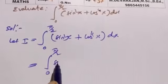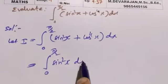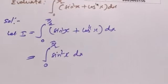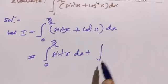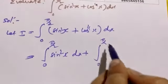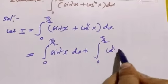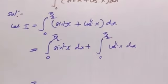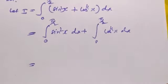This is integral from 0 to π/2 sin squared x dx plus integral from 0 to π/2 cos to the power 4x dx.